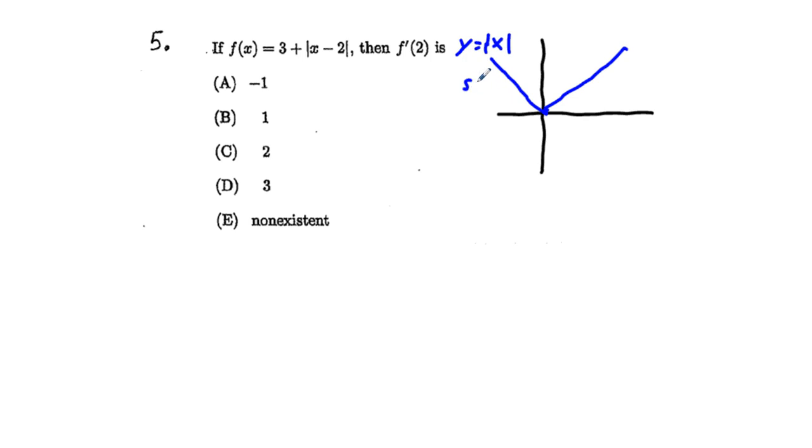Our slope here at the left of X equals 0 is negative 1. Our slope at the right of X equals 0 is 1. What is our slope right here at the origin? Well, the slope at the origin does not exist.